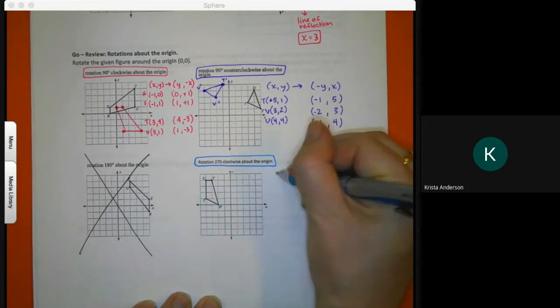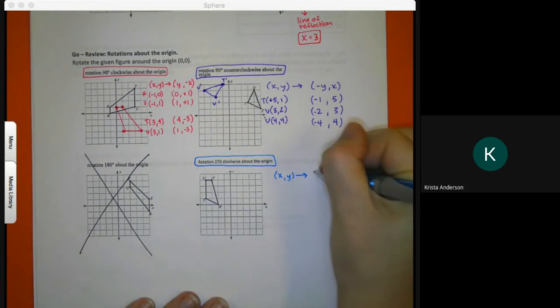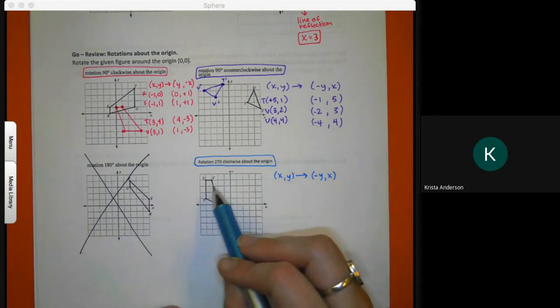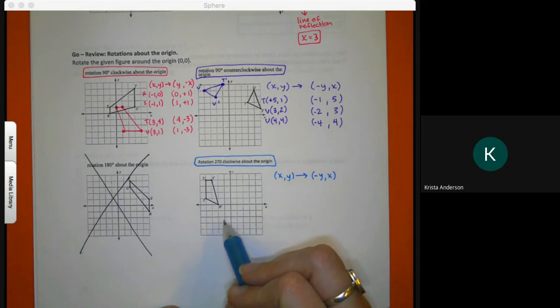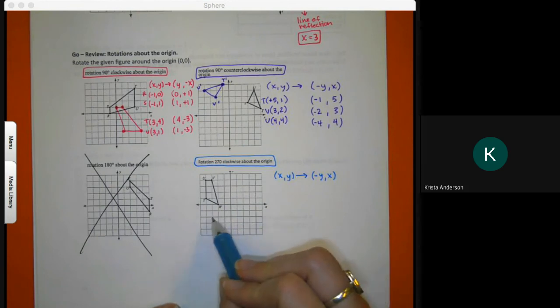270 clockwise. When I check my note card, what does xy change to 270 clockwise? Y comma negative x. That means it'll end up in this quadrant. That would go 90 degrees, 180 degrees, and then 270 to hit in this box.